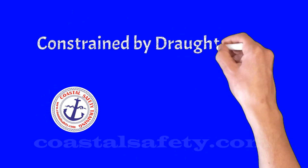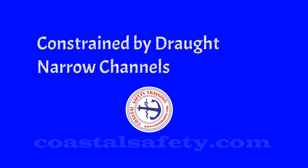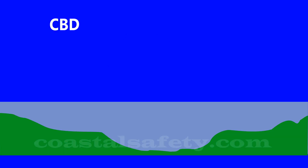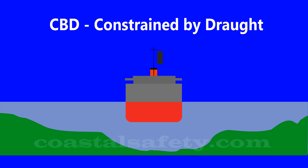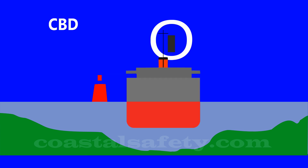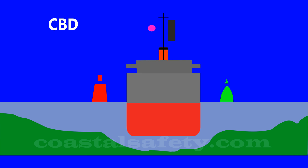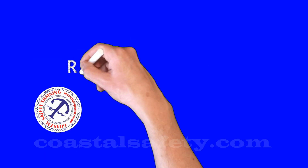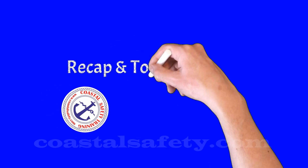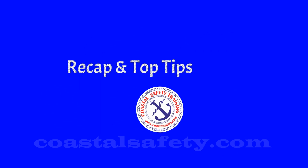Now let's look at the special case of vessels constrained by their draft and vessels operating in narrow channels. A large vessel may only be able to stay in the middle of the channel, marked with port and starboard buoys. She displays a cylinder during the day and three red lights in a vertical line at night. Sailing vessels must keep out of the way, and power-driven vessels less than 20 metres should also keep out of the way.